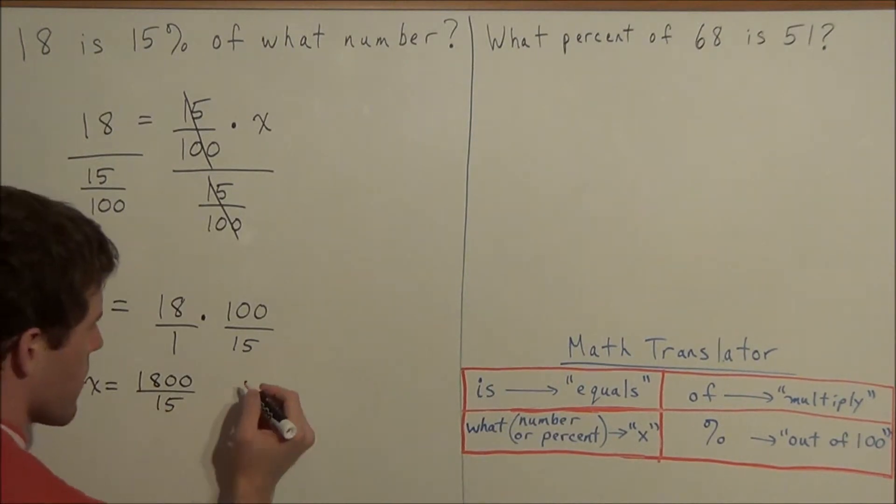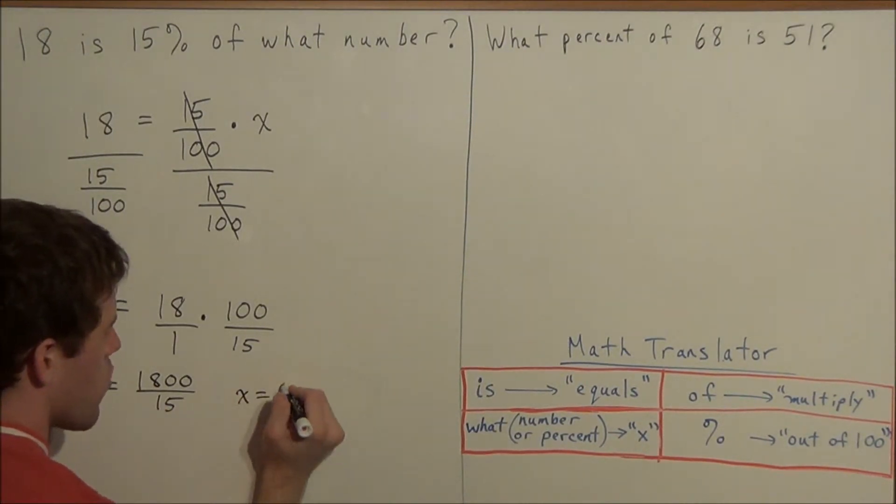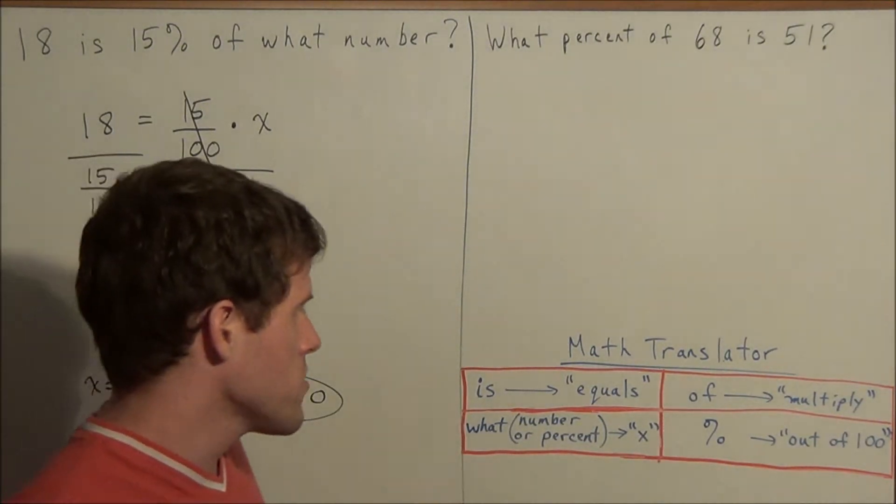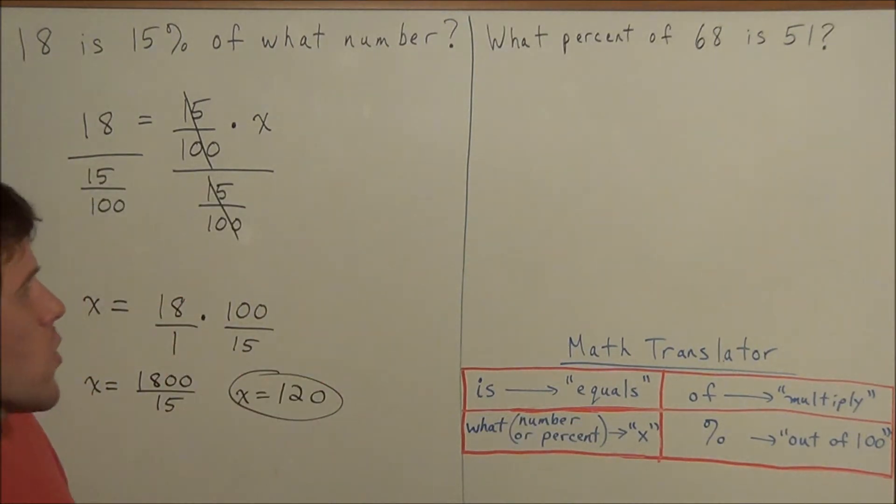And now 1800 divided by 15 is 120. So our answer to the first problem is 120. So now once again we're going to use this math translator to answer the second question.